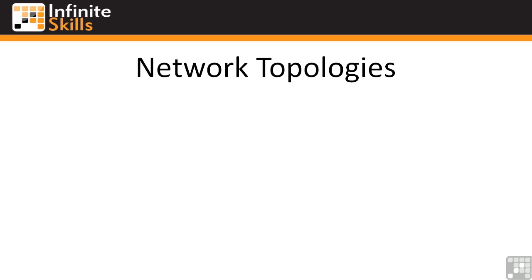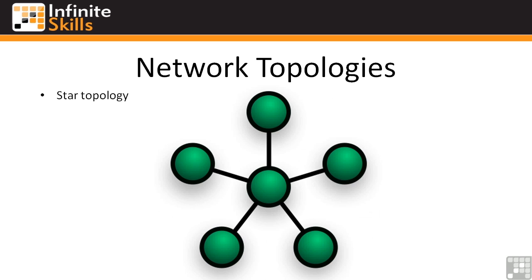The third topology is the star topology. Every device is connected to a central point, and this is the type of network you'll find most frequently in use. If you have an Ethernet network with switches or hubs in the middle, this is how it's going to be laid out. The advantage is that every device is separated from every other device, so if one cable goes down, you only lose communications to that one workstation or printer or server. The downside is that if the switch in the middle goes down, everybody's down, unlike the ring topology where you could have a ring going the opposite direction.